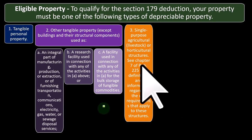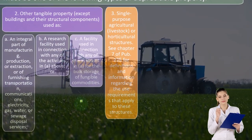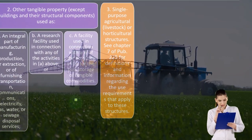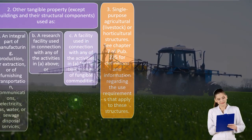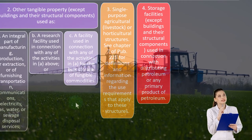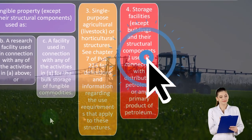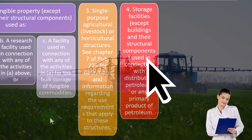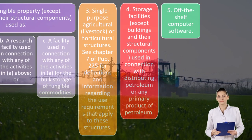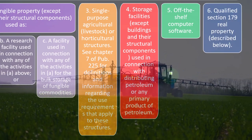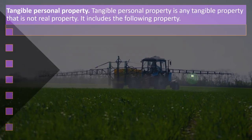Three: single-purpose agricultural, livestock, or horticultural structures. See Chapter 7 of Publication 225 for definitions and information regarding use requirements that apply to these structures. Number four: storage facilities, except buildings and their structural components, used in connection with distributing petroleum or any primary product of petroleum. Five: off-the-shelf computer software. Six: qualified Section 179 real property, described below.